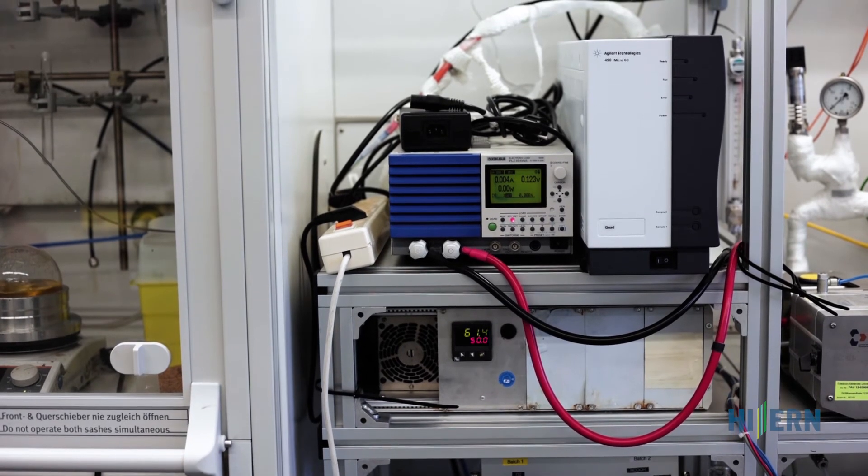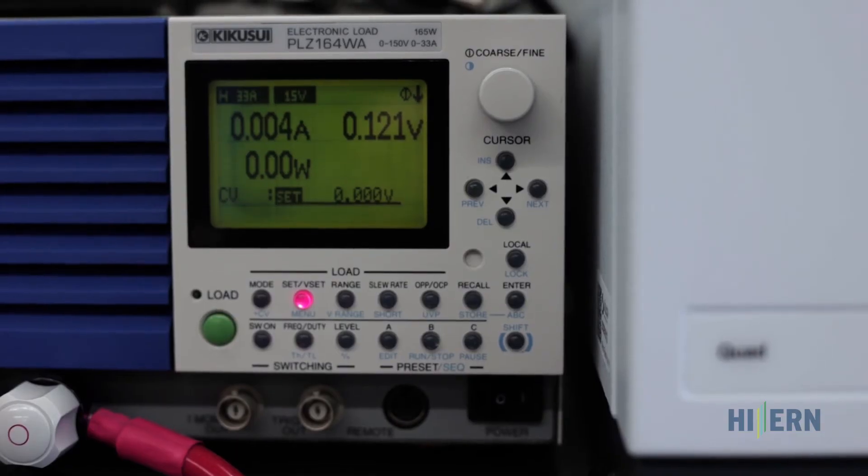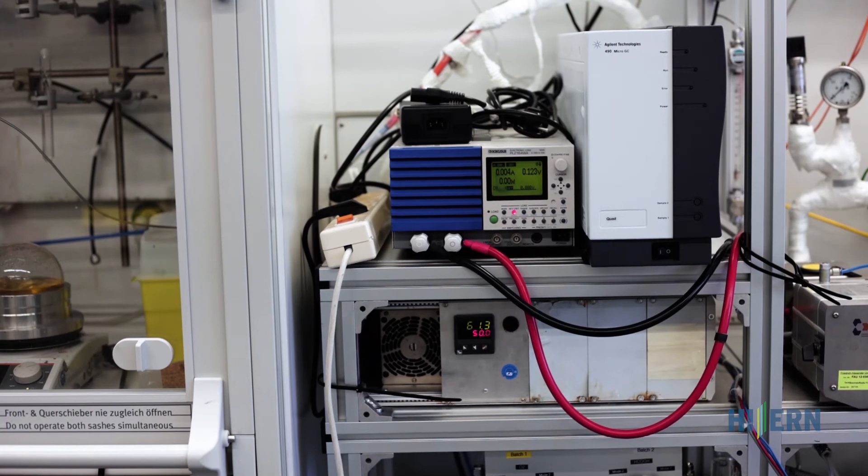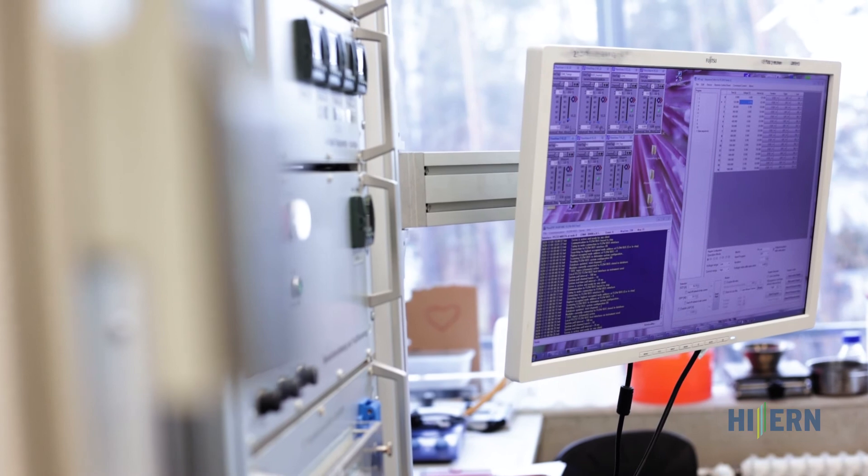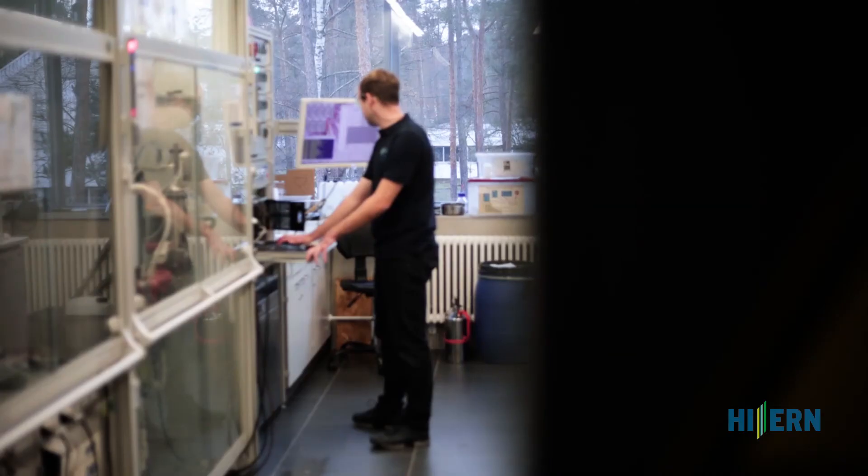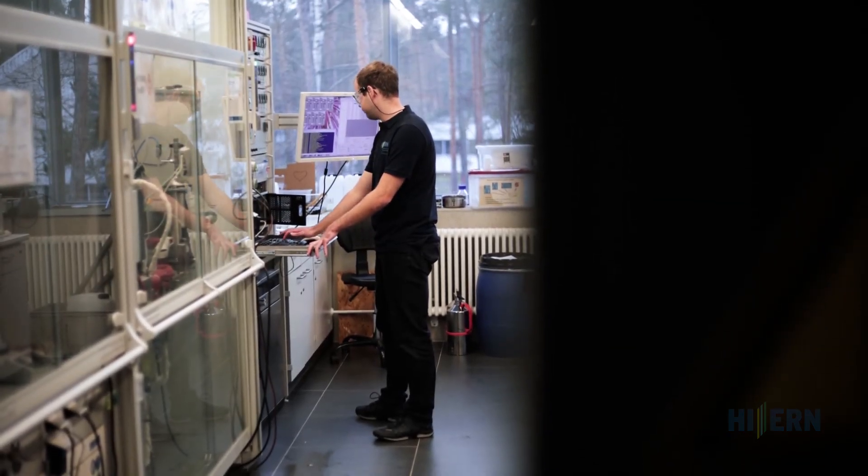To investigate fuel cells, so-called current voltage curves are recorded. In addition to current voltage curves, the product composition is of interest. The product analysis takes place in a gas chromatograph.